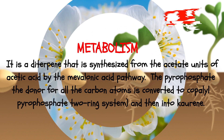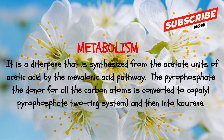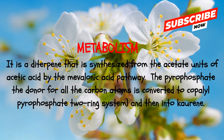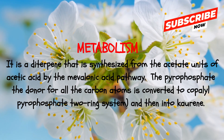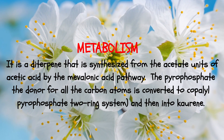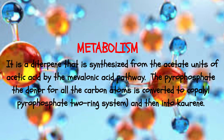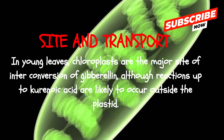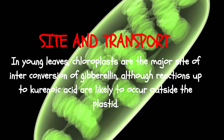Gibberellins are found in all plants. Metabolism: Gibberellin is a diterpene synthesized from acetate units of acetic acid by the mevalonic acid pathway. The pyrophosphate donor for all carbon atoms is converted to copalyl pyrophosphate to form the ring system and then into ent-kaurene. In young leaves, chloroplasts are the major site of inter-conversion of gibberellin, although reactions up to kaurenoic acid are likely to occur outside the plastid.